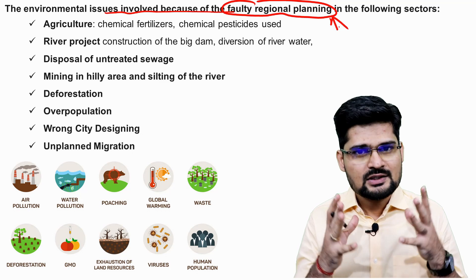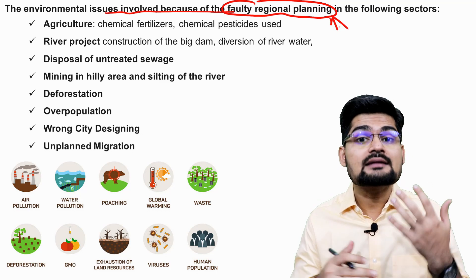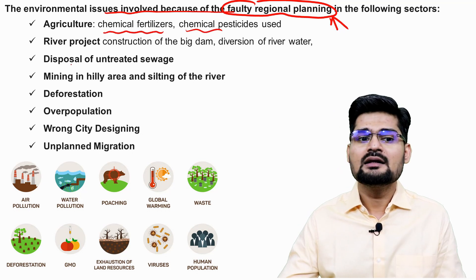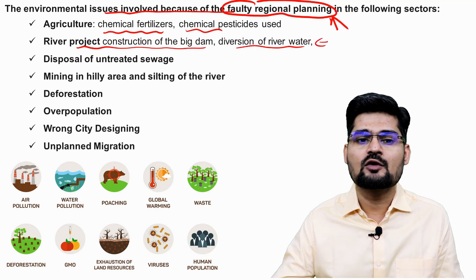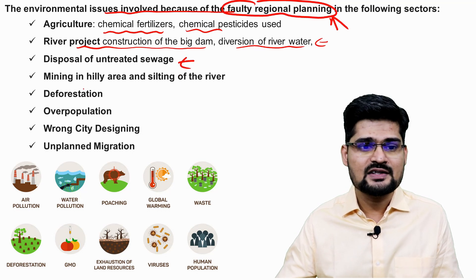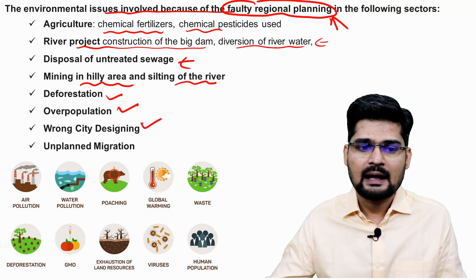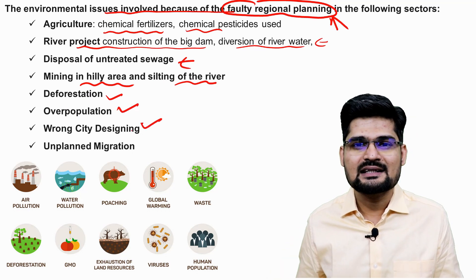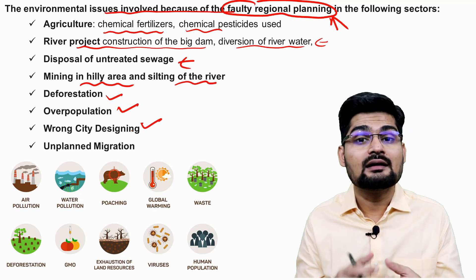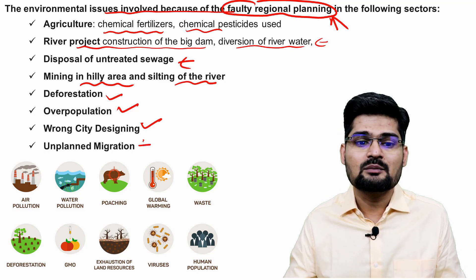Environmental issues caused by faulty regional planning include: chemical fertilizers and pesticides in agriculture; construction of big dams and diversion of river water with ecological challenges; disposal of untreated waste; mining in hilly areas causing silting of rivers; deforestation; overpopulation; and wrong city design — where cities expand in an unplanned manner that is later regularized, which itself leads to problems.